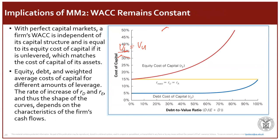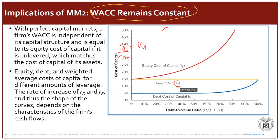Another implication of MM2: with perfect capital markets, a firm's WACC is independent of its capital structure. Regardless of the capital structure mix, the return on unlevered equity stays the same, and since R_U = WACC, the WACC also stays constant. As debt increases, the required rate of return on equity increases to compensate, keeping the weighted average constant.